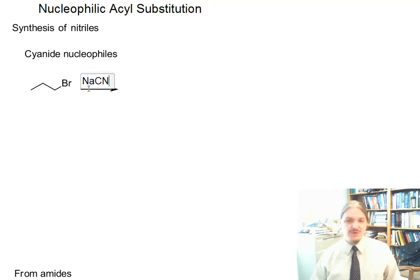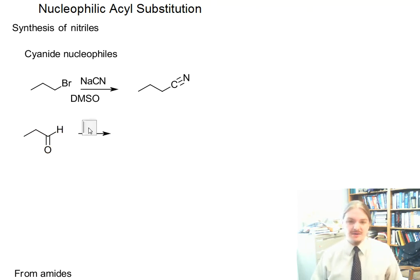For example, you can react alkyl halides with sodium or potassium cyanide under SN2 kinds of conditions to get nitriles. Or you can react alkyl halides and ketones with potassium cyanide and hydrogen cyanide and make cyanohydrins.